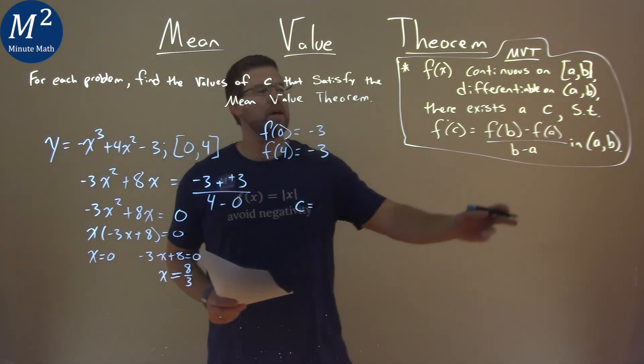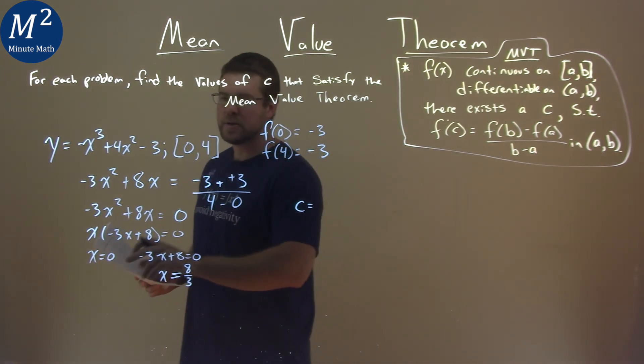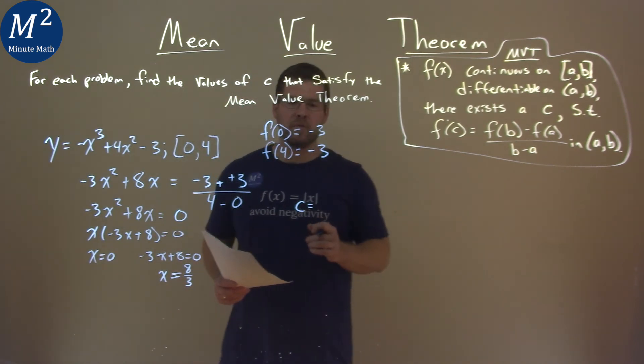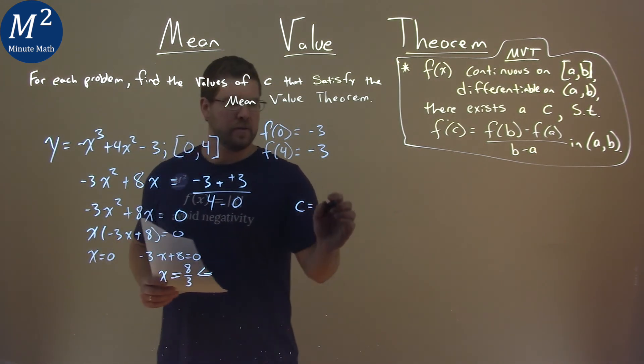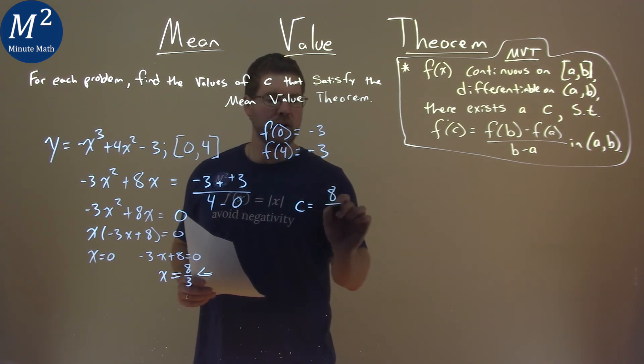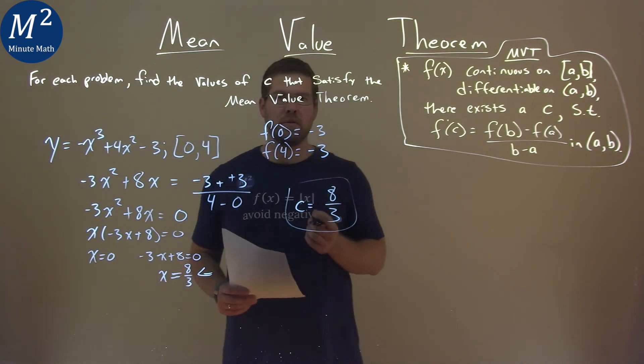They indicate with a parenthesis from a to b on that interval, so 0 actually falls just outside of that interval and we cannot use it. 8/3 is the only one we can use. So, c = 8/3 is the value that satisfies the Mean Value Theorem.